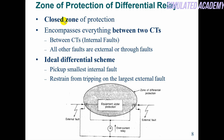Zone of protection for differential relay — close zone of protection. Zone of protection is the area where CTs and PTs are placed, i.e., the external boundary defined by the CT/PT locations, and the equipment inside that zone is what we protect. It is the area between the CTs. Any fault outside this zone is called a through fault, and any fault inside is called an internal fault. An ideal differential scheme operates for minimum internal fault and restrains for any external fault.